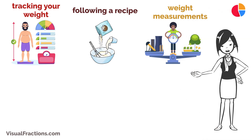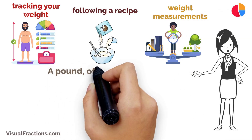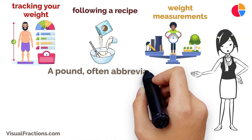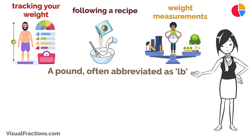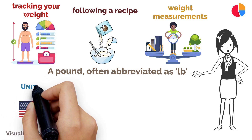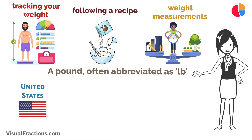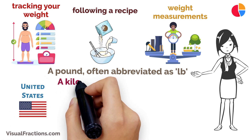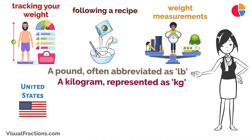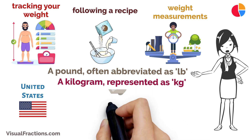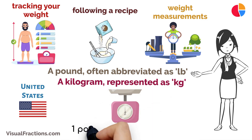Let's start with the basics. A pound, often abbreviated as lb, is a unit of weight commonly used in the United States and a few other countries. A kilogram, represented as kg, is the standard unit of weight in the metric system used worldwide.